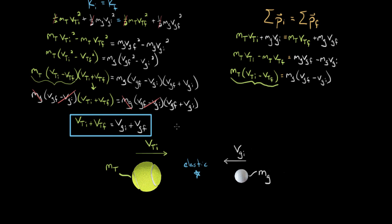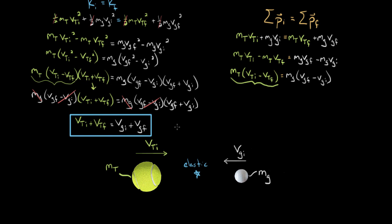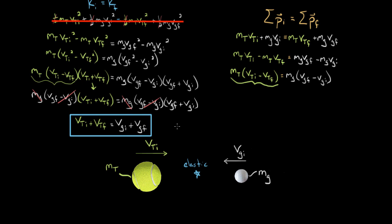To recap: we used a symbolic expression for conservation of momentum and plugged it into the conservation of energy formula, ending up with a beautiful, simple result that lets us solve elastic collision problems while avoiding conservation of energy every single time.